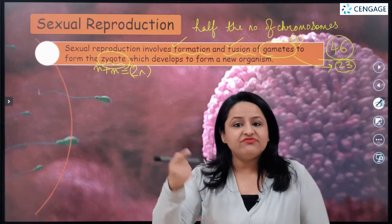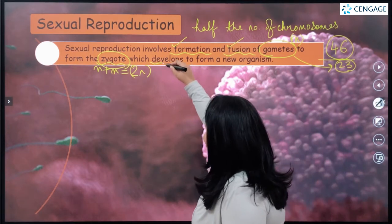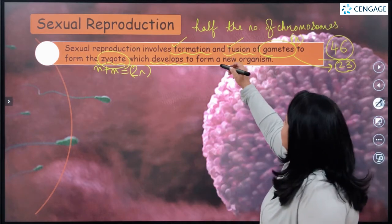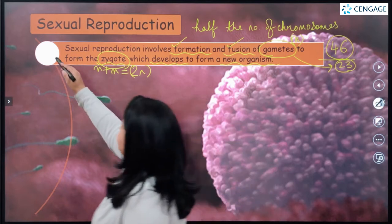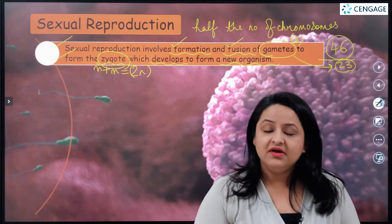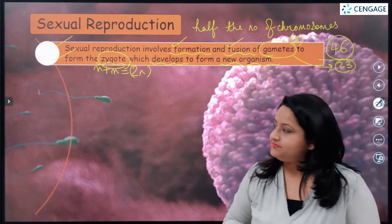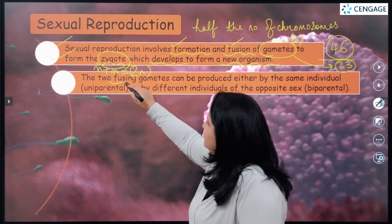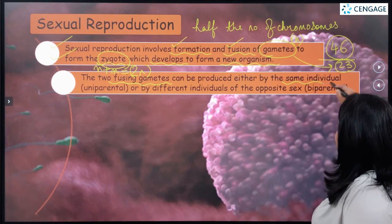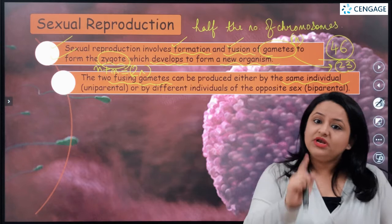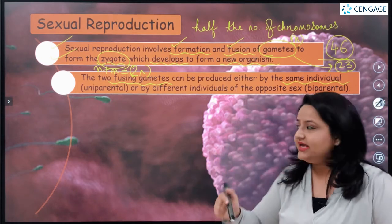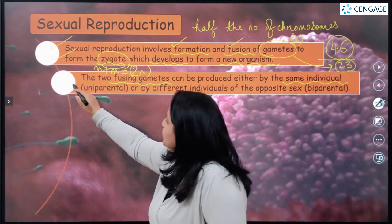The zygote is the first diploid cell of our body. It keeps on dividing mitotically through cleavage divisions and develops into a new organism. This summarizes the whole of sexual reproduction. Now, the two fusing gametes can either be produced by the same individual — a single individual able to produce two types of gametes — and in that case we call the reproduction uniparental, because only one parent is involved.